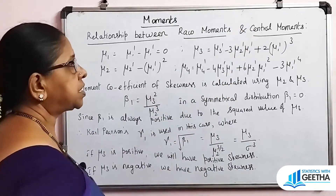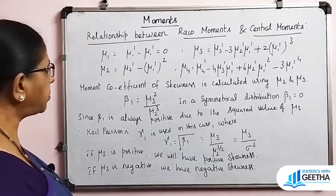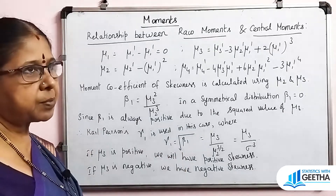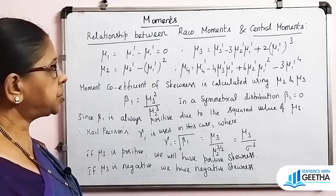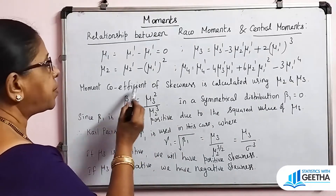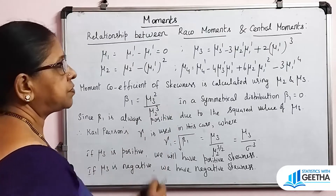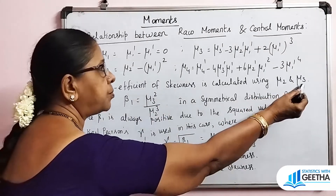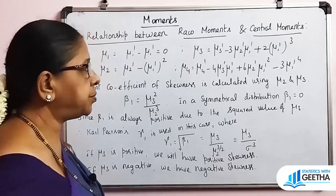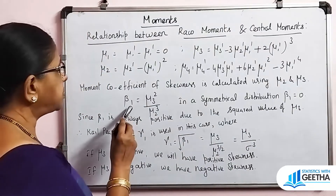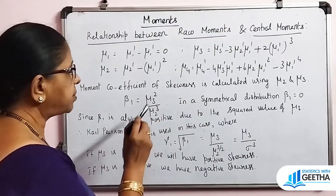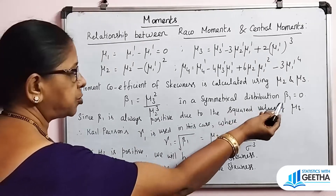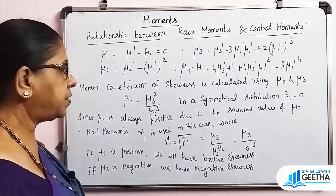From the central moments we calculate the moment coefficient of skewness. The formula is beta1 = mu3² / mu2³. For a symmetrical distribution, beta1 is always equal to 0.